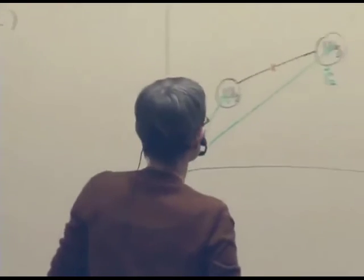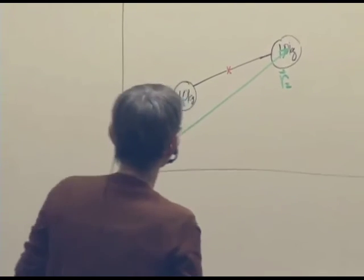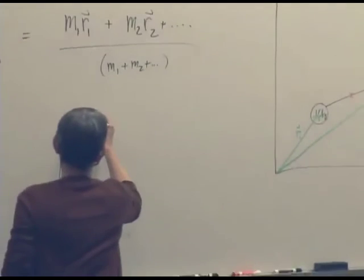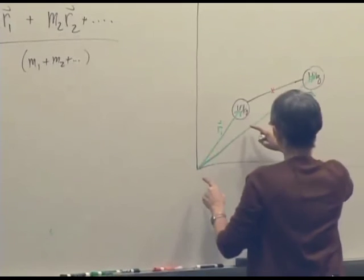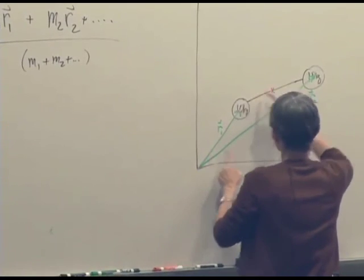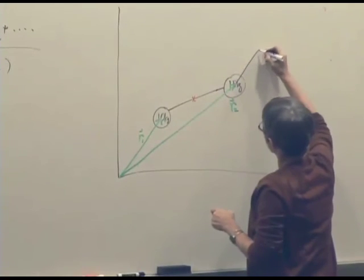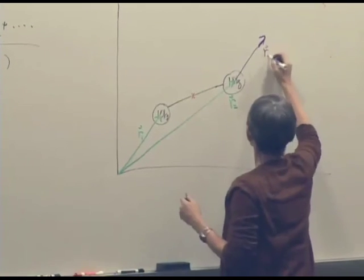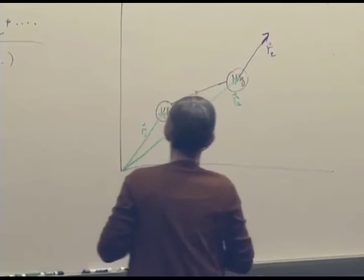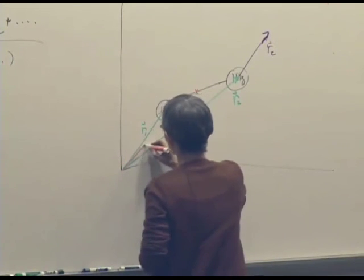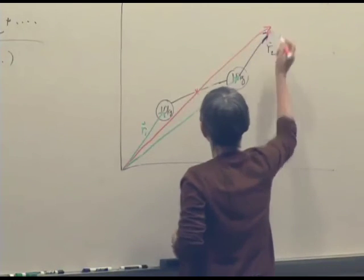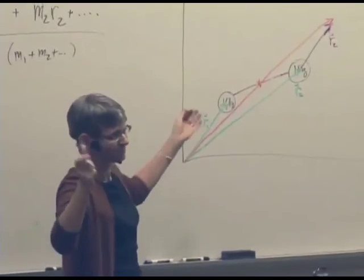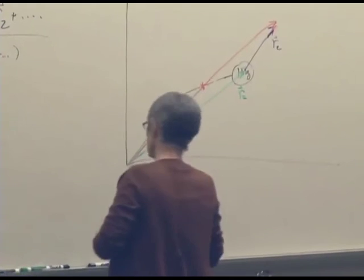We can see graphically that this is actually going to work out. We put these things tip to tail to add them, and the sum vector — if we go halfway up this vector — finds it actually goes to the center of mass. So it works out graphically.